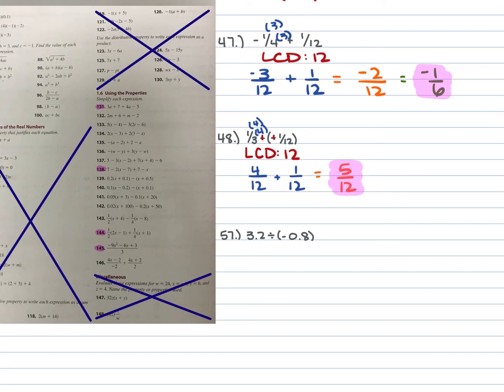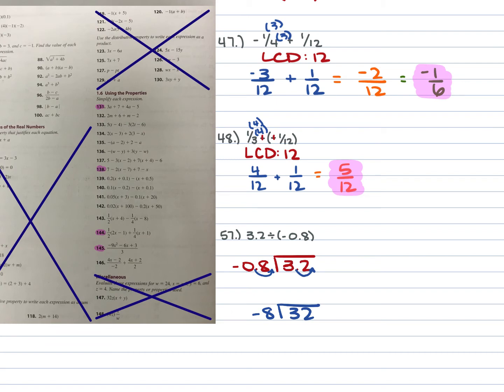For number 57, we have 3.2 divided by negative 0.8. You can convert decimals to fractions and use keep-change-flip, or work with decimals. Place negative 0.8 outside the division house and 3.2 inside. Since you can't divide by a decimal, move the decimal point right once to make it negative 8, and do the same to make 32 inside. Negative 8 goes into 32 four times, and since the signs differ, the answer is negative 4.